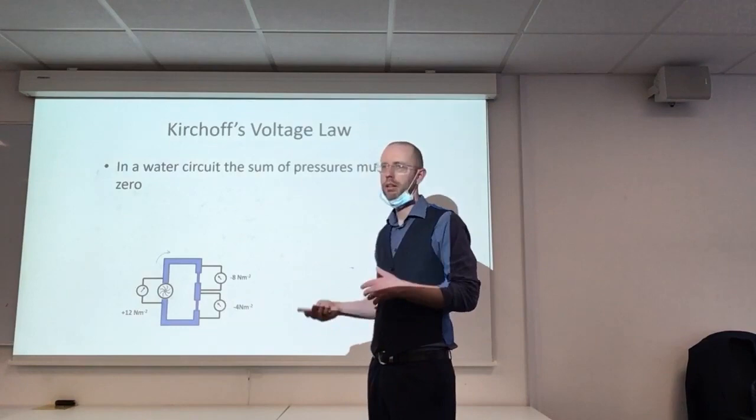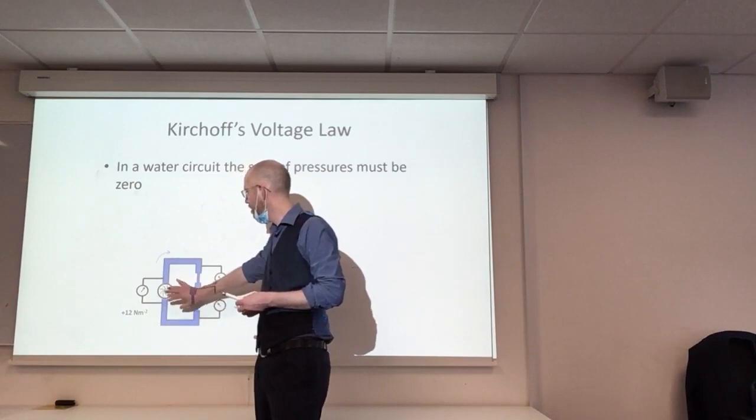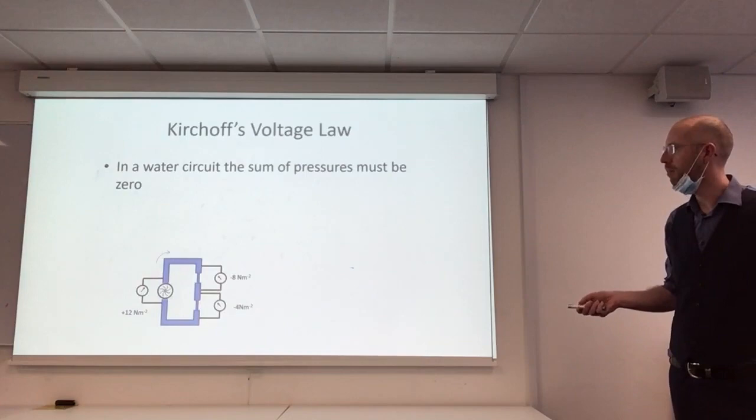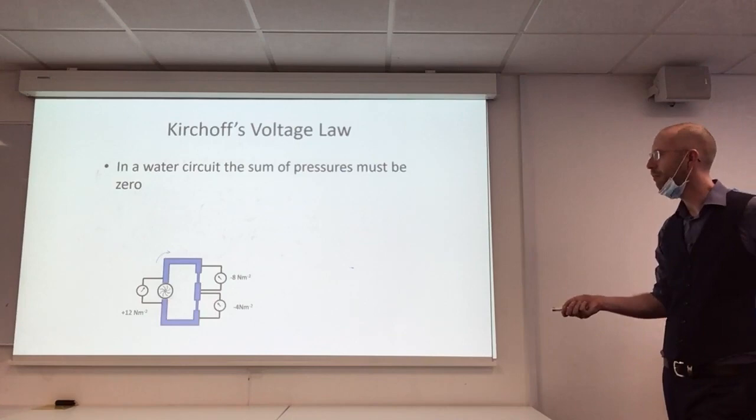So this pressure meter might read plus 12, whatever units of pressure we're measuring. But it's only in relation between two points, so it's just saying this side is 12 units of pressure higher than this side. And that's what that pump can do—it can just add 12 units of pressure from one side compared to the other.